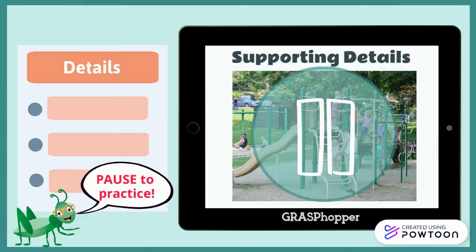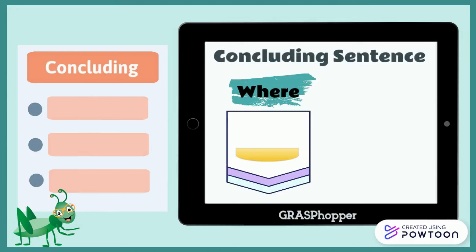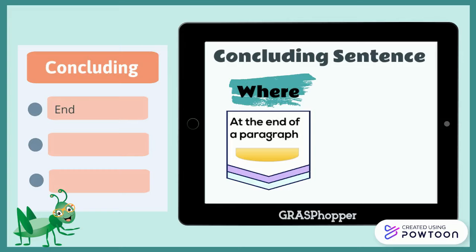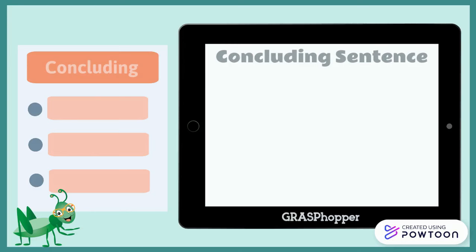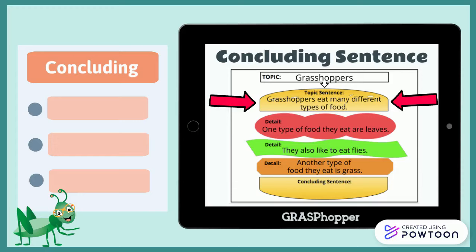The last part is the concluding sentence. This is like the bottom bun of the burger. You will write it after the supporting details. The concluding sentence restates the topic sentence. Let's look at the topic sentence — how can I restate this? Grasshoppers eat different foods.